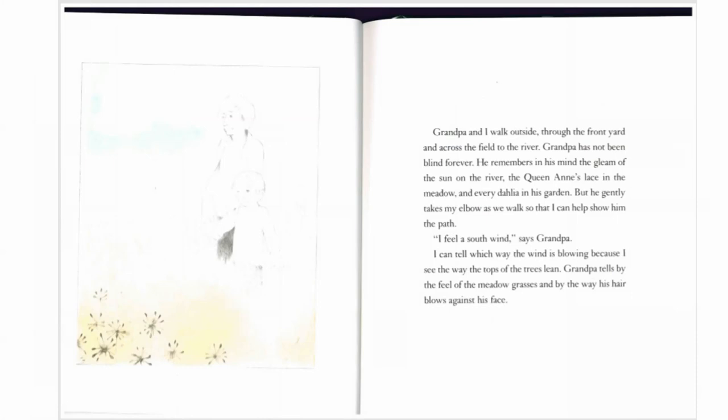Grandpa and I walk outside through the front yard and across the field to the river. Grandpa has not been blind forever. He remembers in his mind the gleam of the sun on the river, the Queen Anne's lace in the meadow and every dahlia in the garden. But he gently takes my elbow as we walk so that I can show him the path. I feel a south wind, says grandpa. I can tell which way the wind is blowing because I see the way the tops of the trees lean. Grandpa tells by the feel of the meadow grasses and by the way his hair blows against his face.